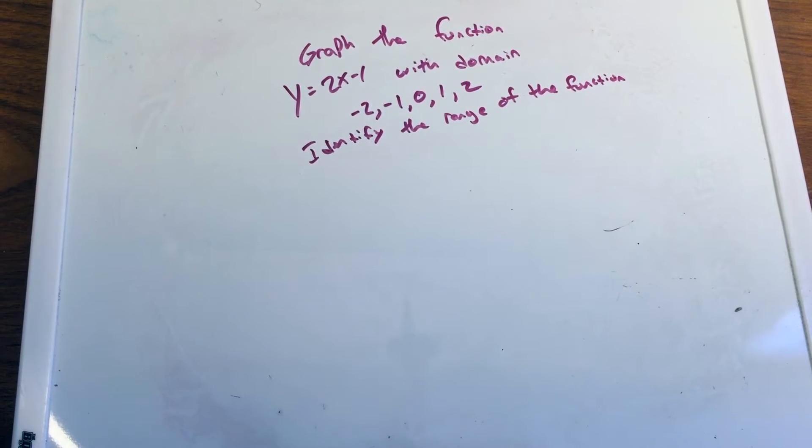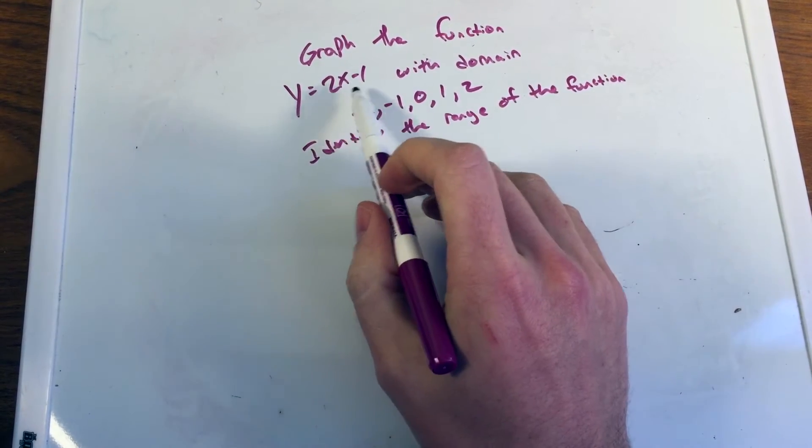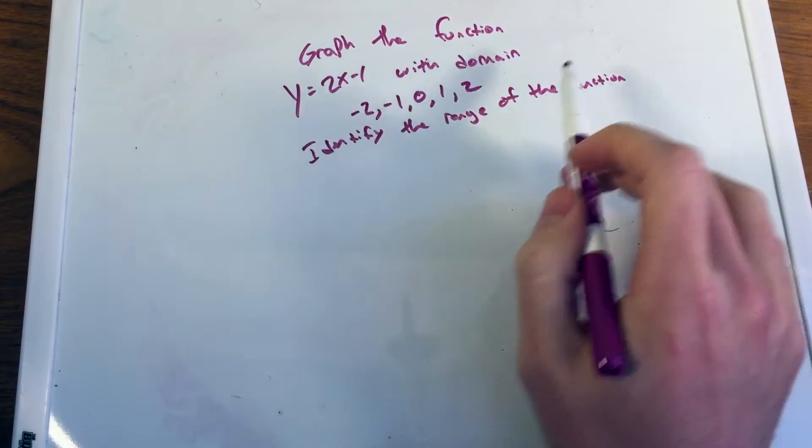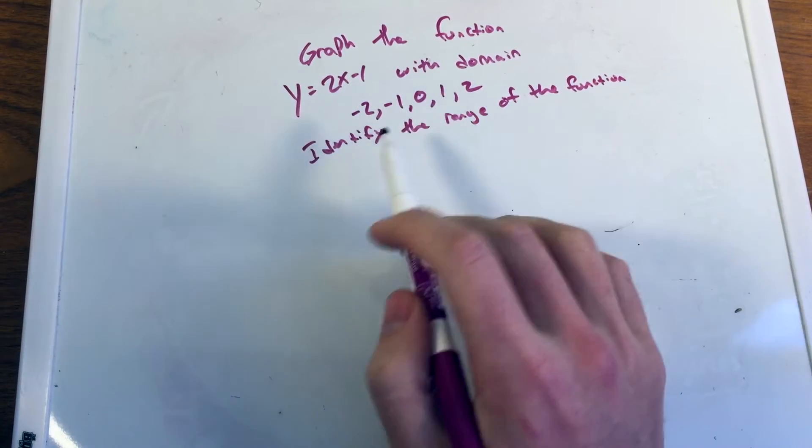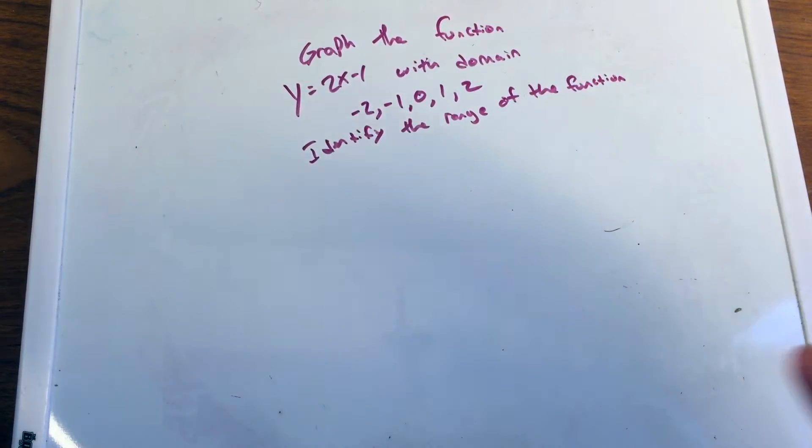Today we're going to be graphing the function y equals 2x minus 1 with a certain domain. That domain is going to be negative 2, negative 1, 0, 1, and 2. And then we want to identify the range of the function.